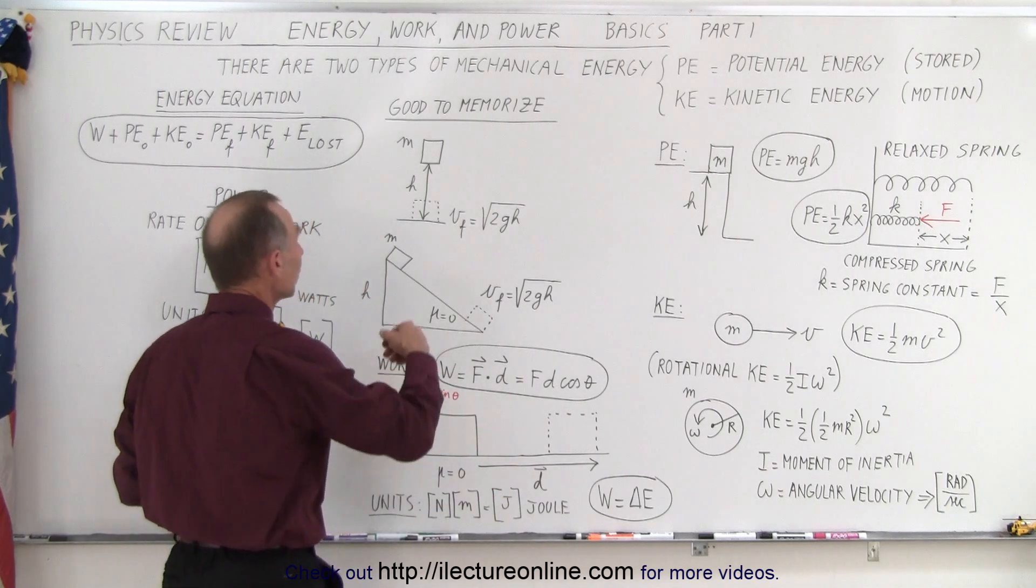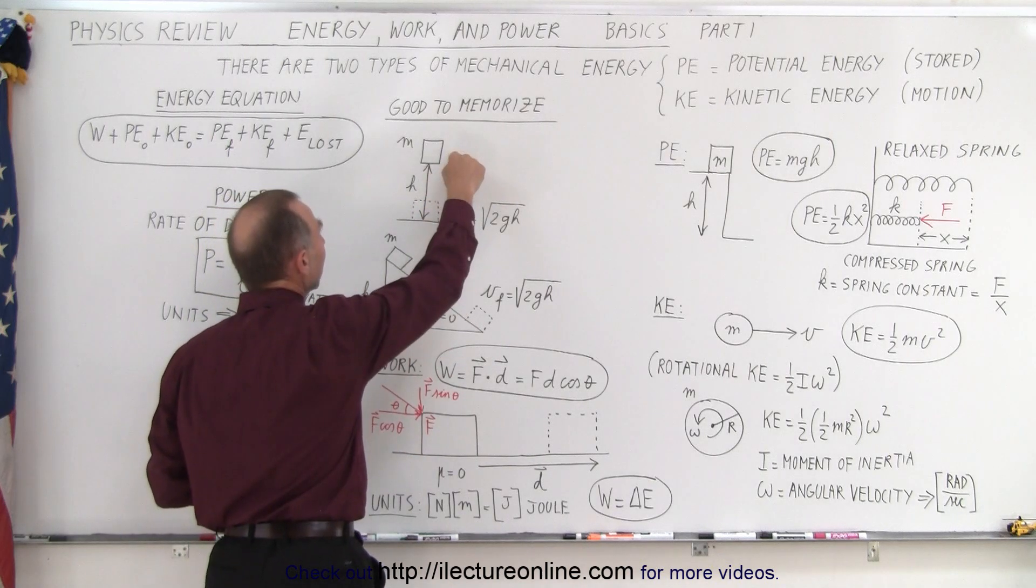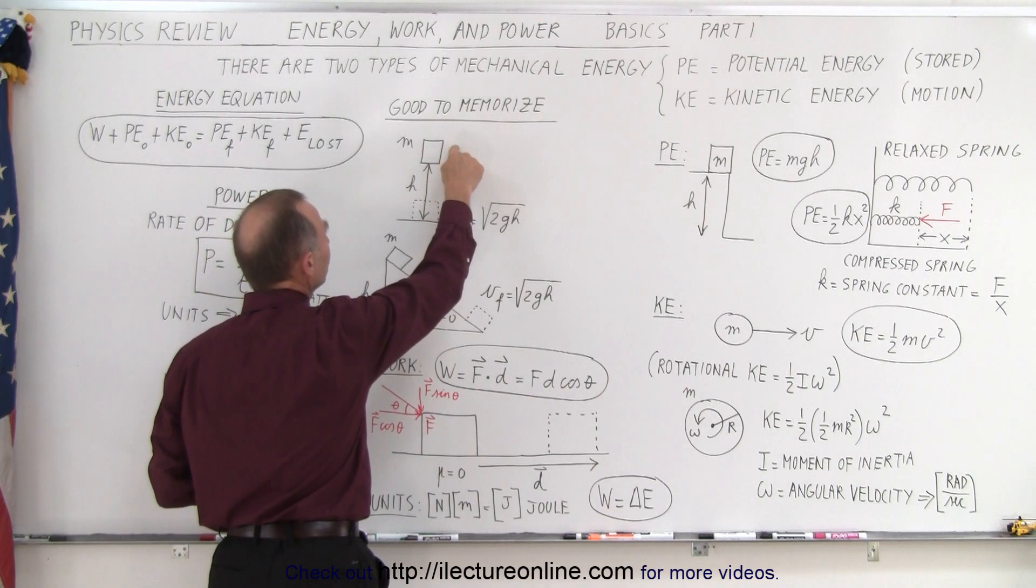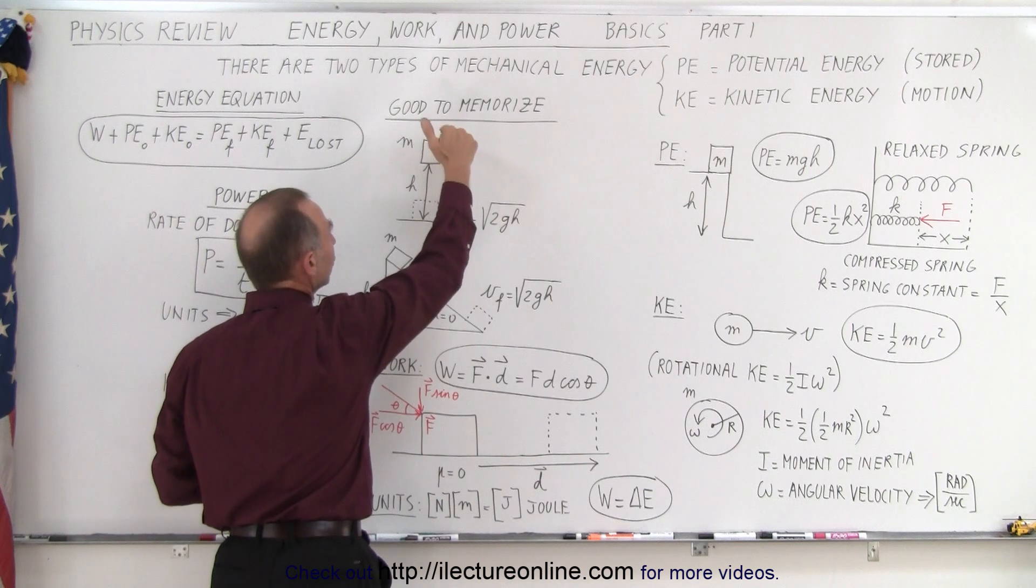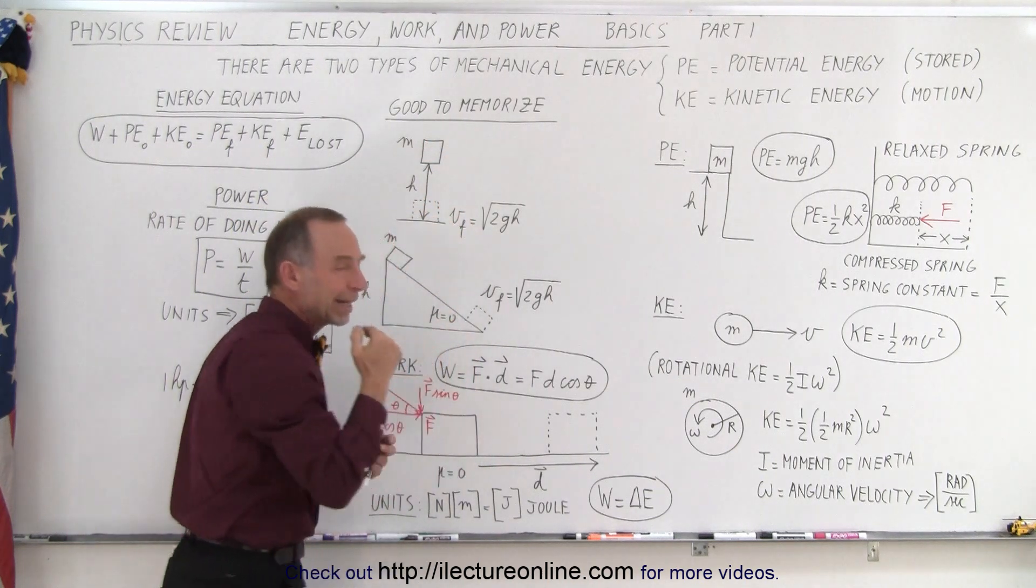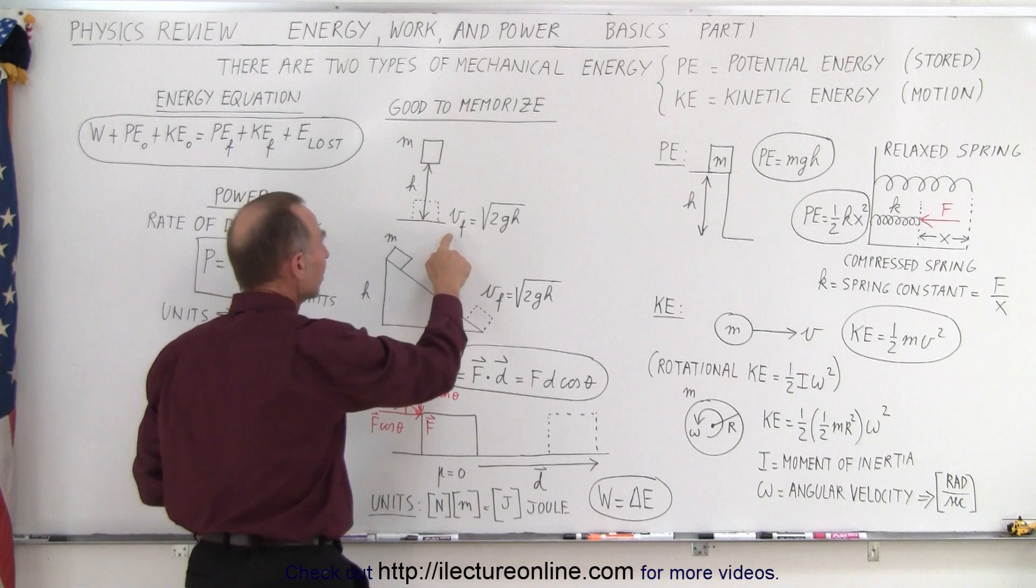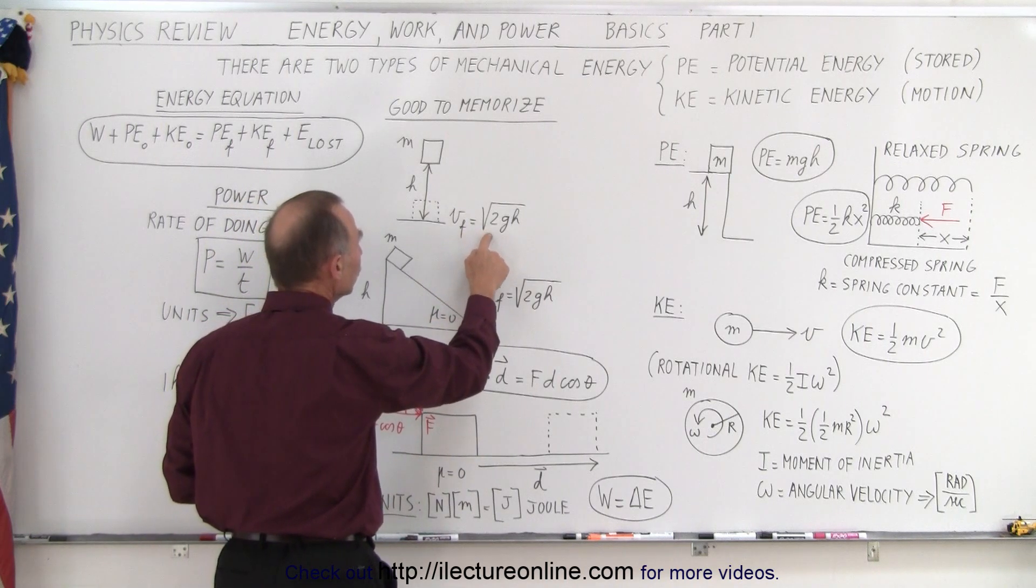A good thing to memorize is that when you have an object at a certain height, and therefore at the top it has potential energy mgh, if you then let it go and it falls to the ground, right before it hits the ground, the velocity at the bottom will be equal to the square root of 2gh.